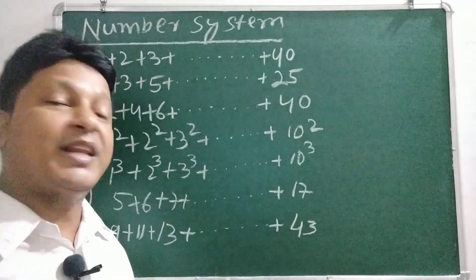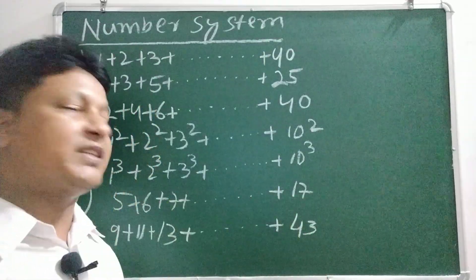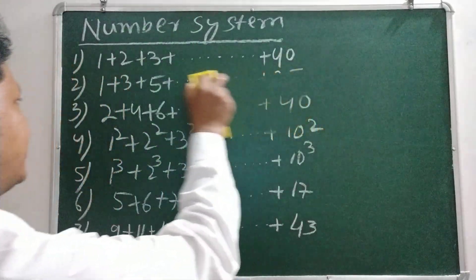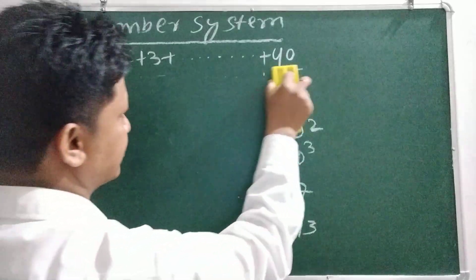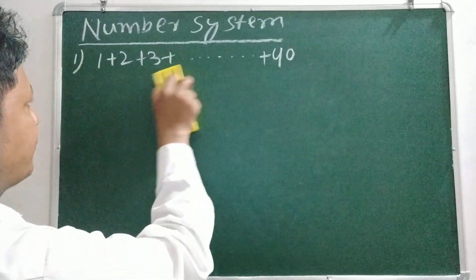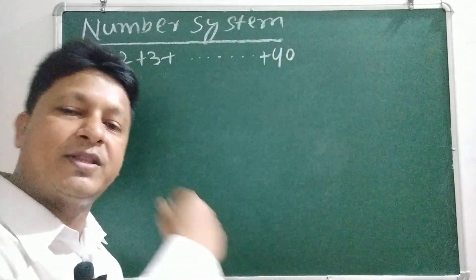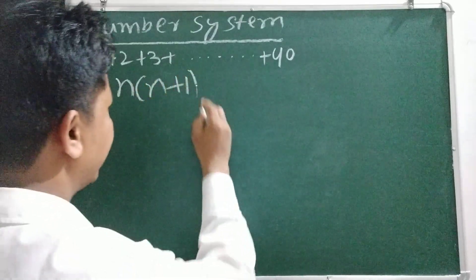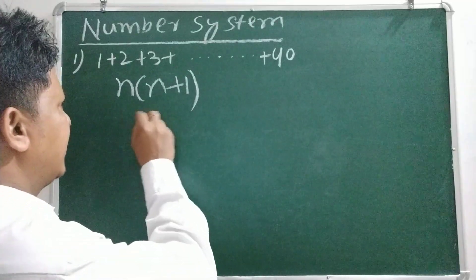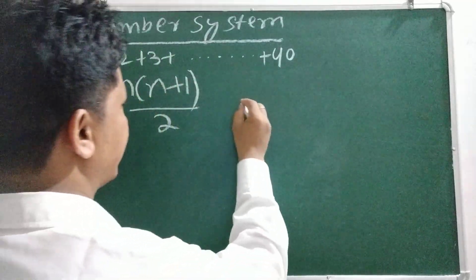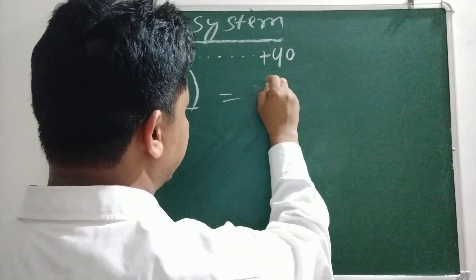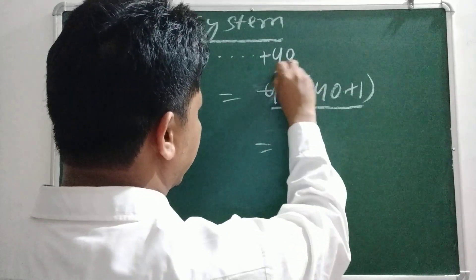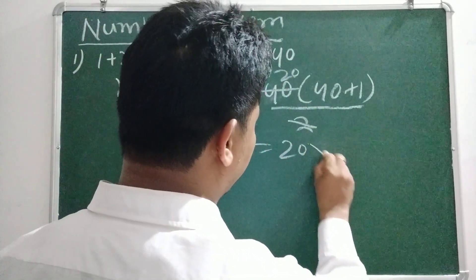We solve each question one by one. We solve all these questions with the formula. The formula is equal to n into n plus 1 by 2. So the formula n into n plus 1 by 2 is equal to — for n equals 40 — 40 into 40 plus 1 by 2, which gives 40 into 41.